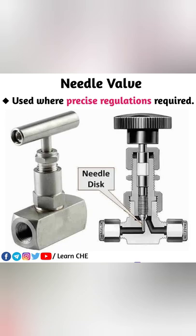Needle valve is relatively small in size compared to other valves and is mainly used where precise regulations are required. It cannot be used in high flow rate regions and is mainly used at the flushing point in the plant — you will mainly see it in fertilizer plants and petroleum plants. There is a needle disc which regulates its flow precisely.